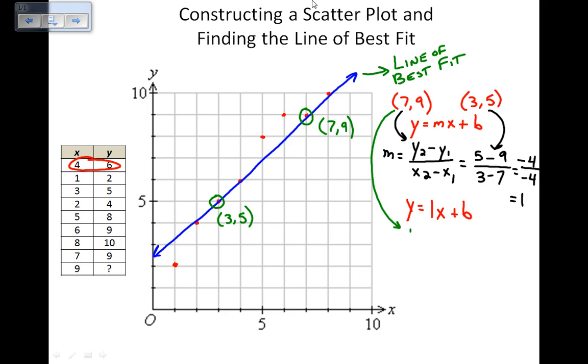We have y, my y value, so 9, equals 1 times my x value, which is 7, plus b. We get 9 equals 7 plus b. Solving for b, subtracts 7 on both sides, and we get b is equal to 2.